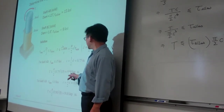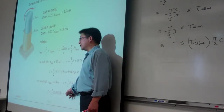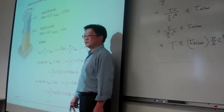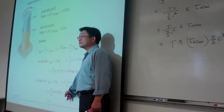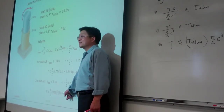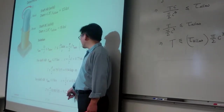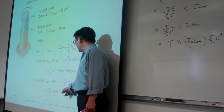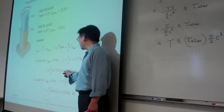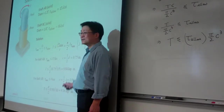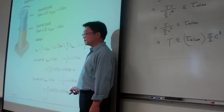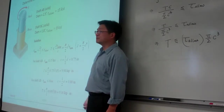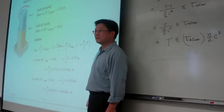T must be less than 9.94 and less than 9.16. So which one should we choose? We pick 9.16, because if T is less than or equal to 9.16, it will automatically satisfy the other condition as well. So the answer for this question is 9.16 — that is the maximum torque we can achieve.